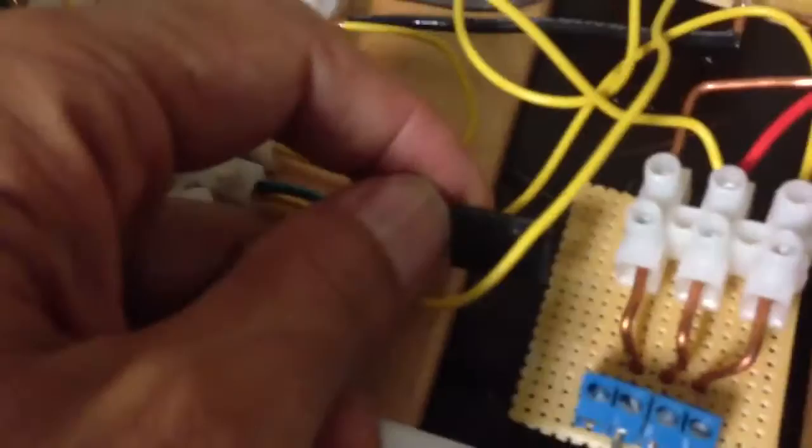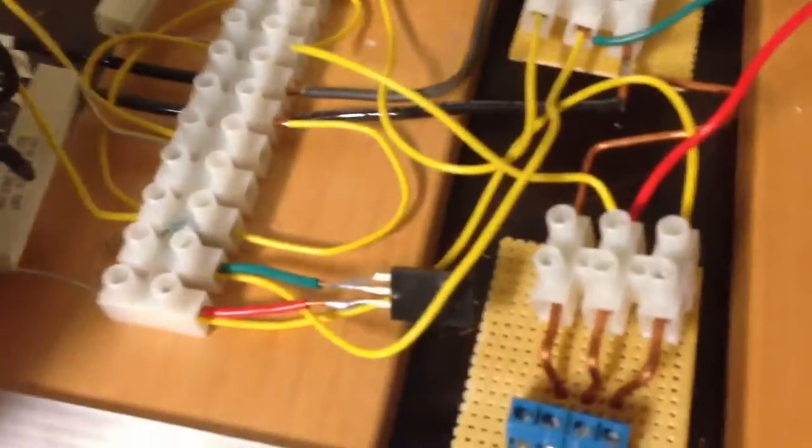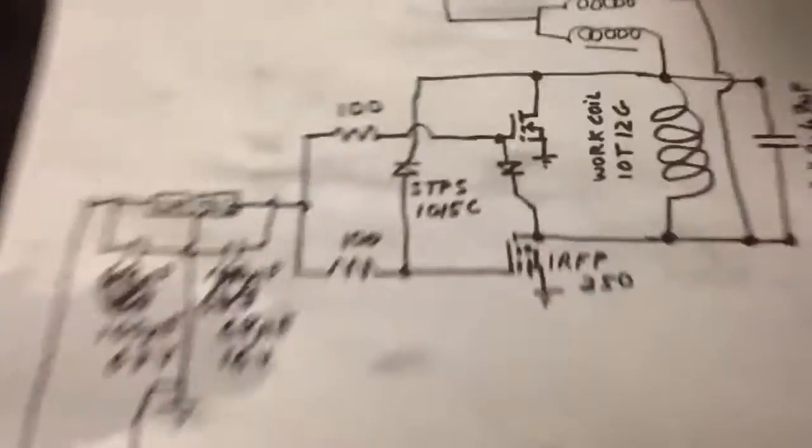Using these Schottky diodes, these are rated for 150 volts. The 12 volt ones I was using before did not seem to hold out too well. Here's the 100 ohm wire wound resistors. And here's my voltage regulator for the gates. It's the basic setup right here in the circuit diagram.